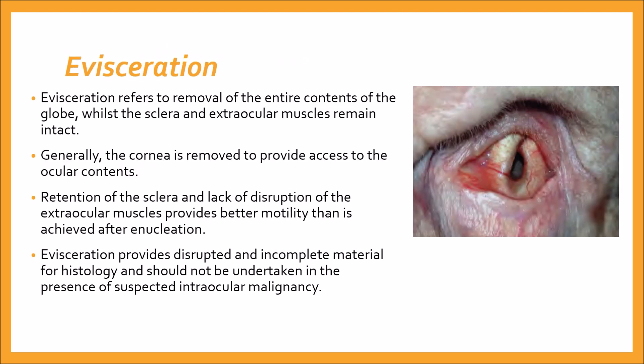Evisceration refers to removal of the entire contents of the globe while the sclera and extraocular muscles remain intact. Generally, the cornea is removed to provide access to the ocular contents. Retention of the sclera and the lack of disruption of the extraocular muscles provide better motility than is achieved after enucleation, because all of the globe is removed in enucleation. Evisceration provides disrupted and incomplete material for histology and should not be undertaken in the presence of suspected intraocular malignancy.